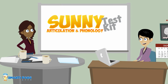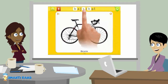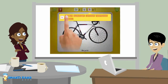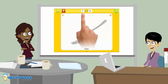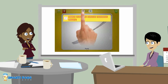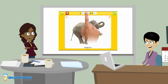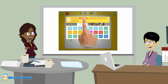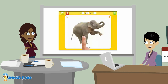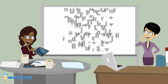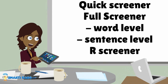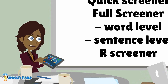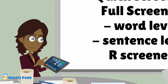Imagine having the app automatically analyze the test and create a report for you — a dream come true, right? Present the image to the child and tap on the target sound to mark the error. You can choose from articulation errors or phonological processes. If the student makes a sound substitution, just tap on the sound produced and you are all set — super easy! You can administer a quick screener, a full screener which includes both consonants and vowels, and also tests at the sentence level.